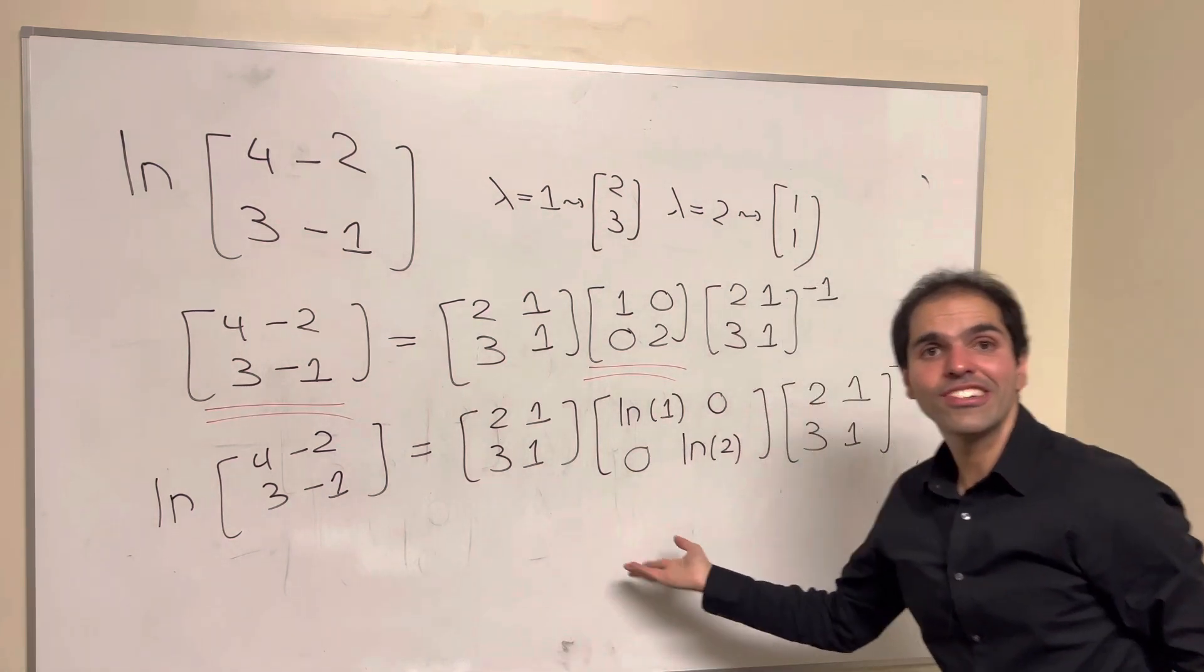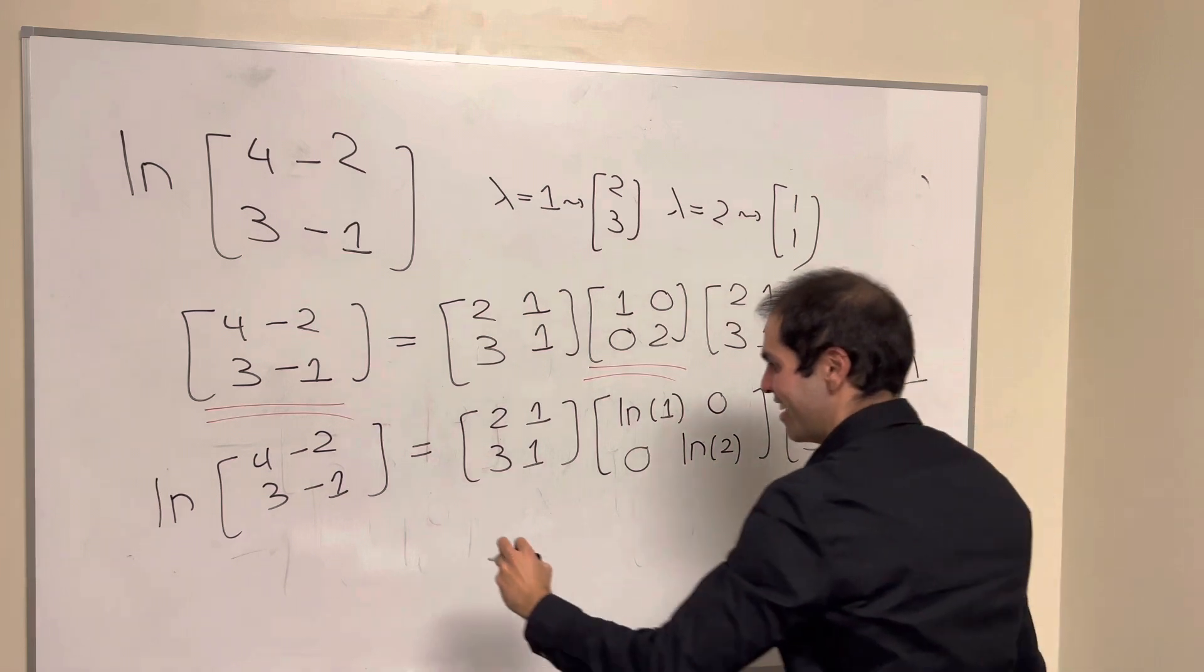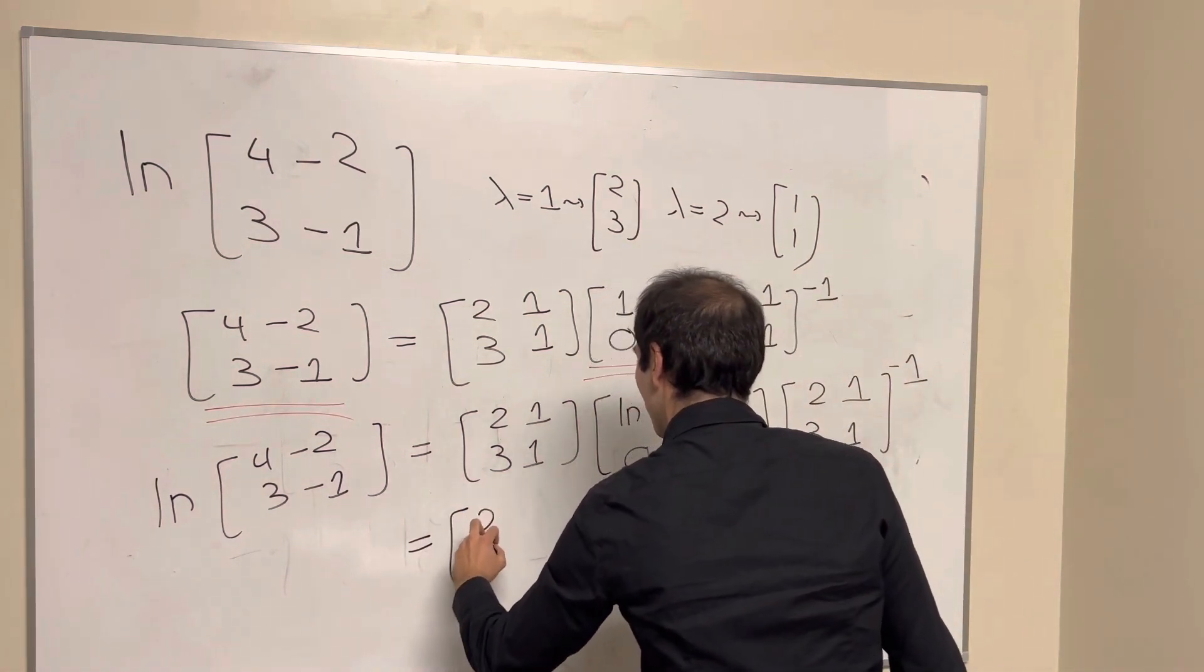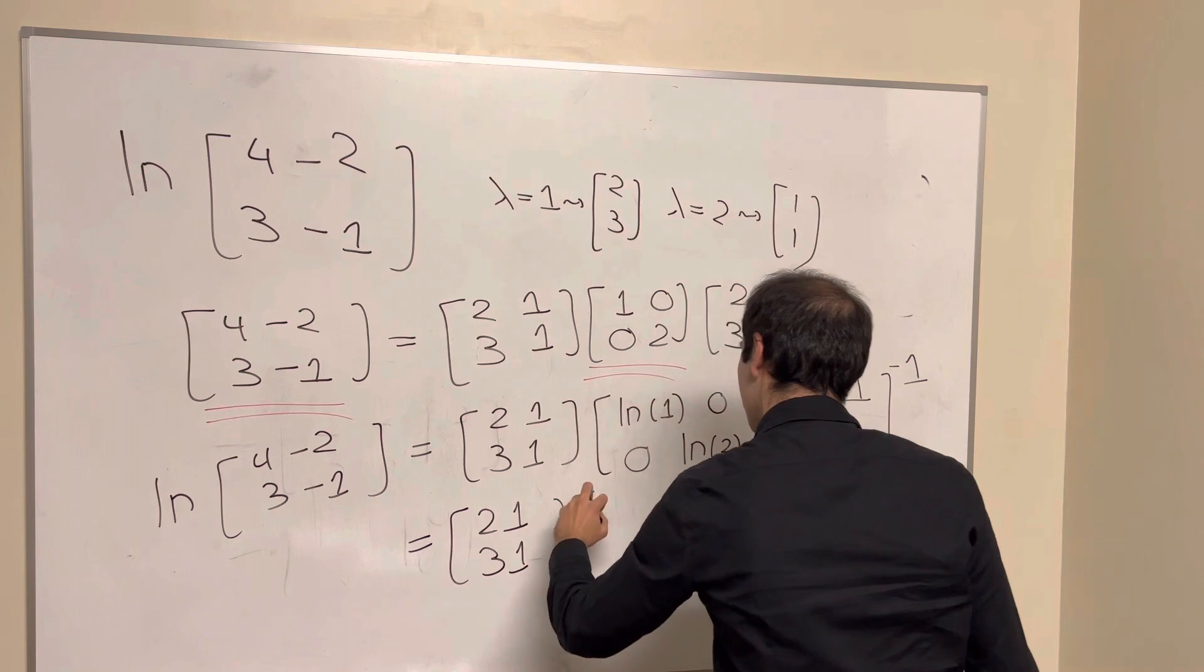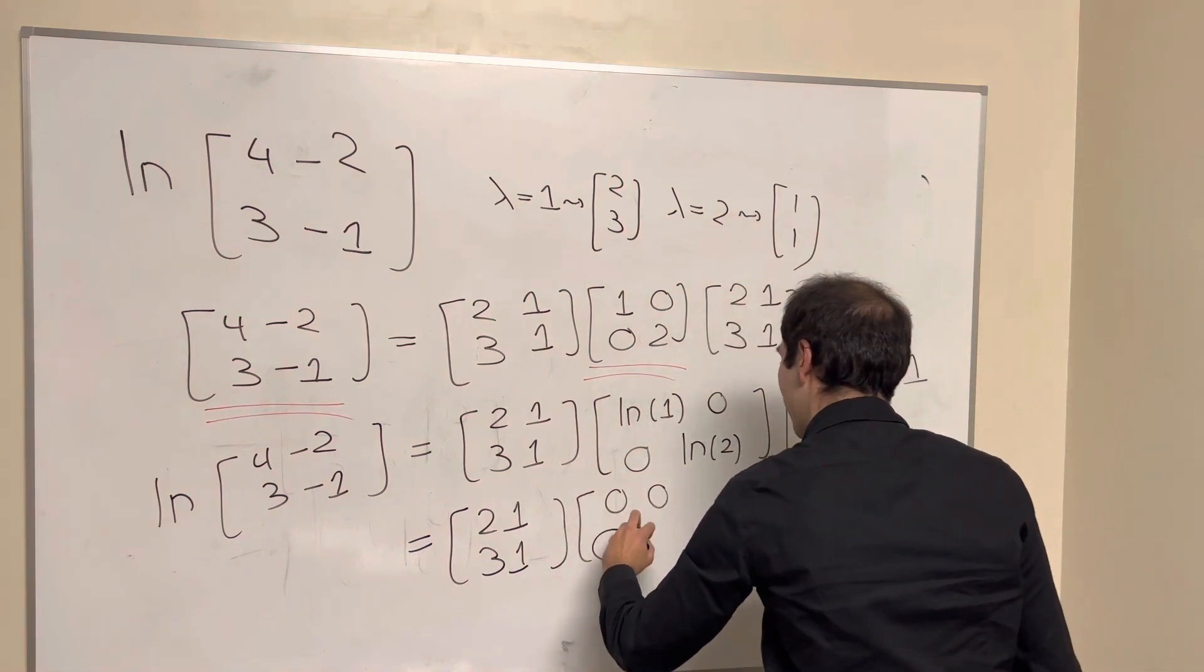And, in particular, here, the ln is nicely simplified, so this becomes 2, 1, 3, 1, 0, 0, 0, ln of 2.